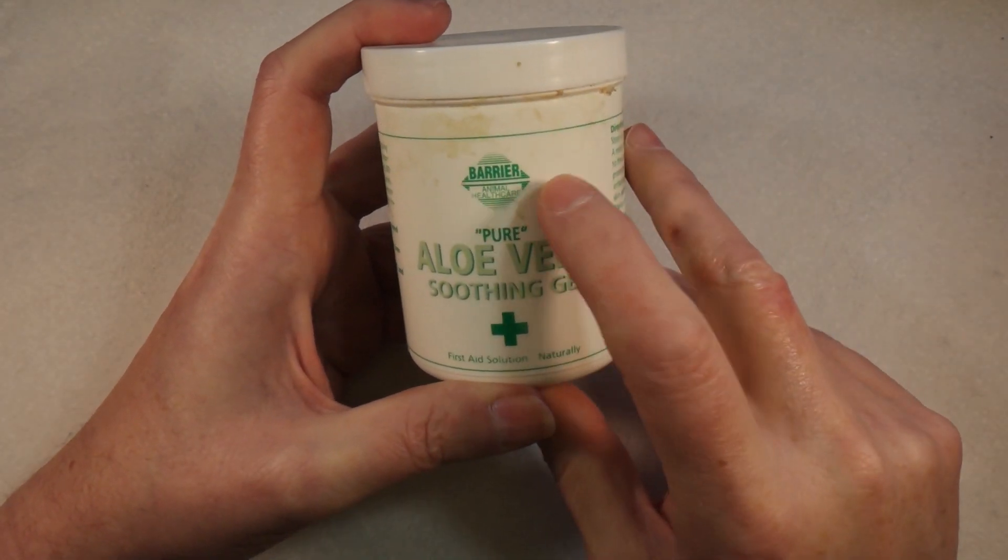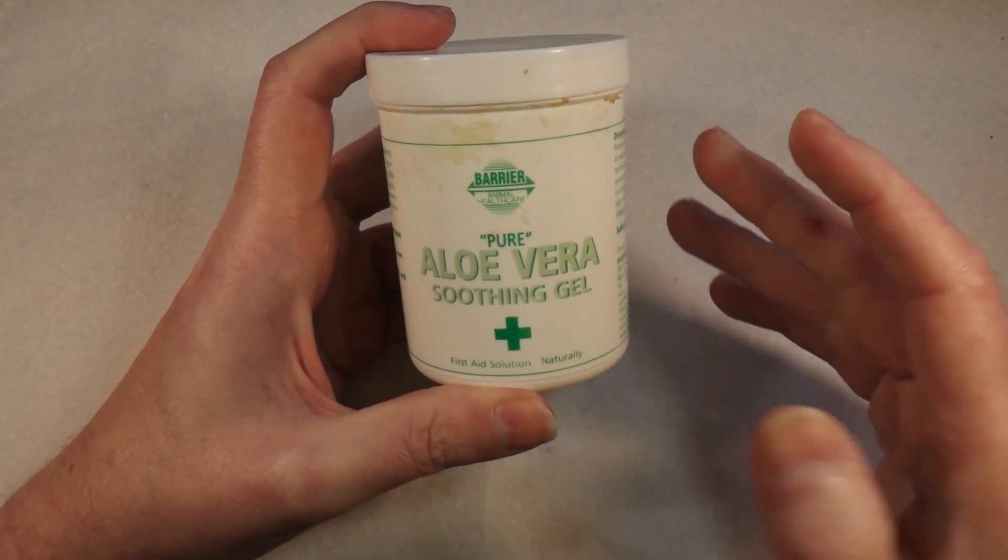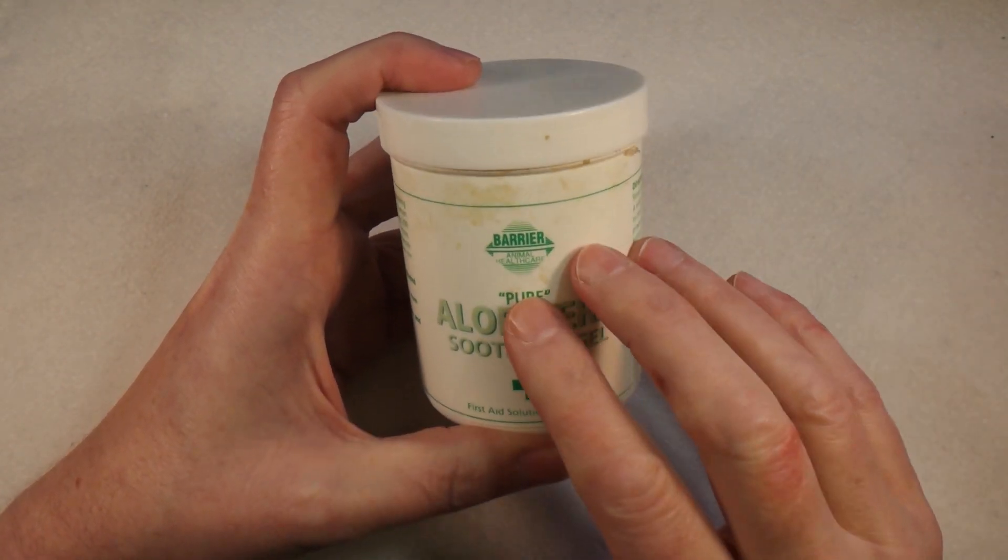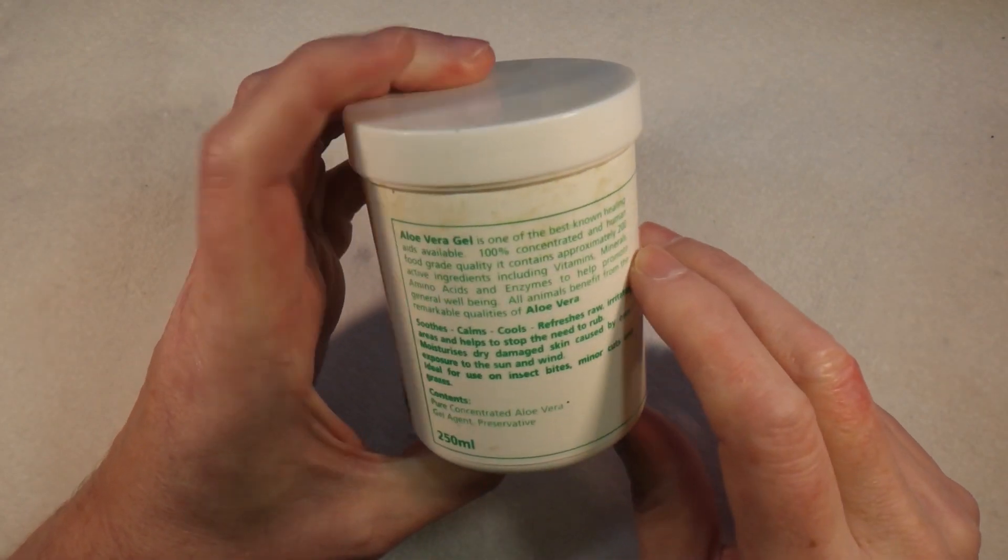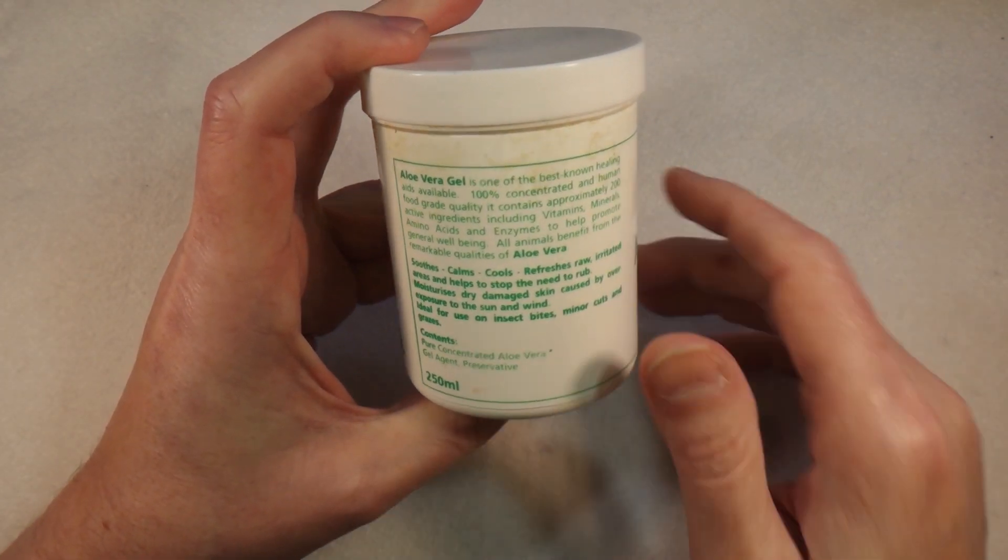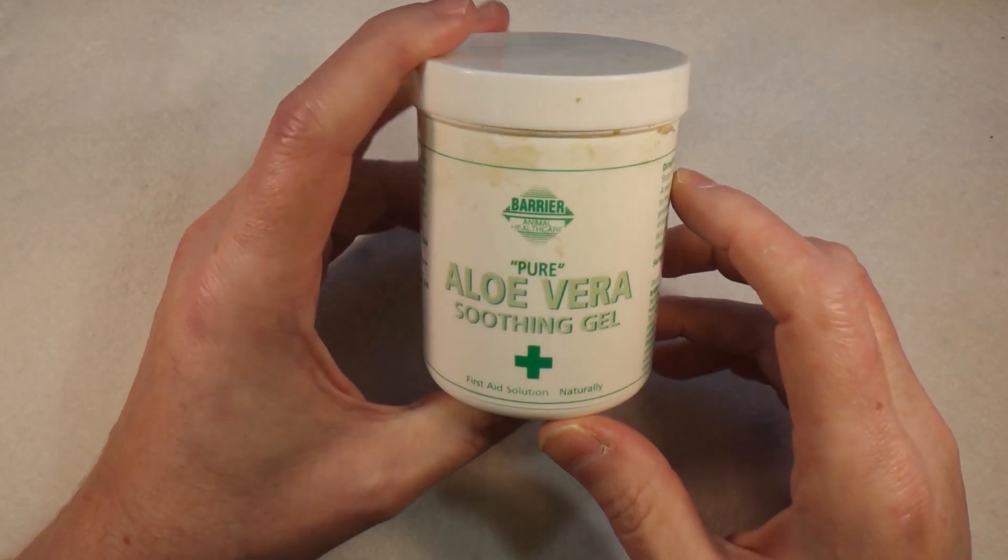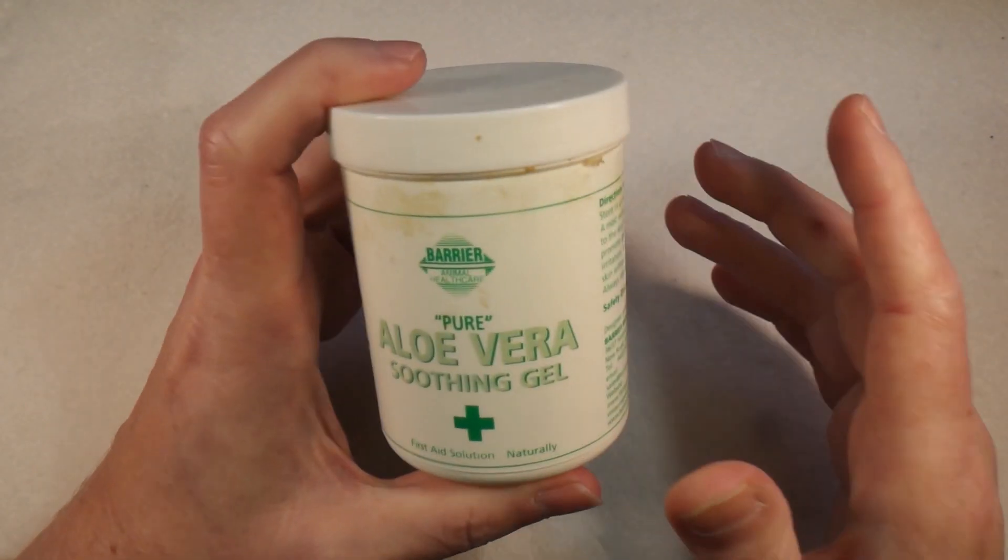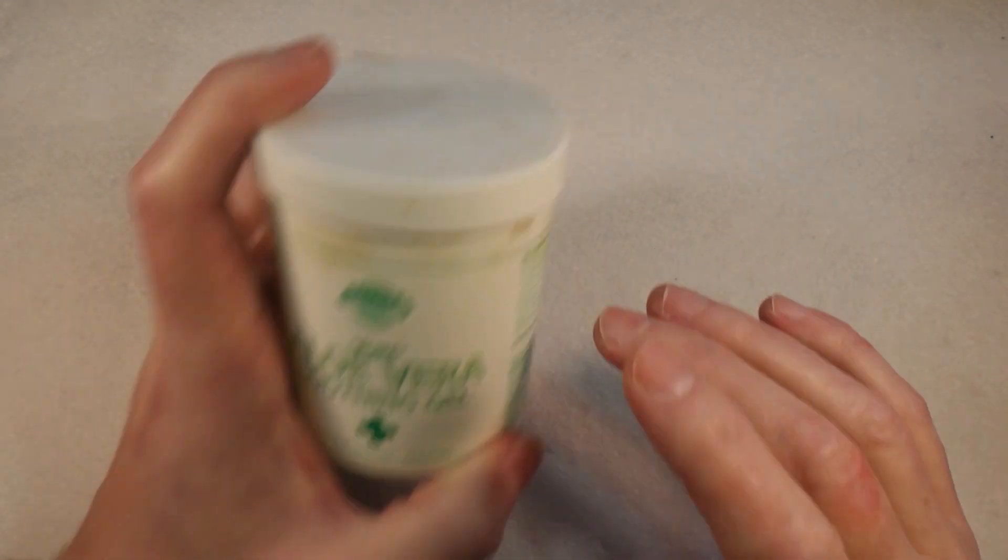There's also this one which is from Barrier Animal Health Care. Now I know it says Animal Health Care, it doesn't matter. It's meant for horses but if you look at the ingredients, concentrated aloe vera gel and preservative. It's perfectly fine to put on your hands, it's not like you're going to be eating the stuff.